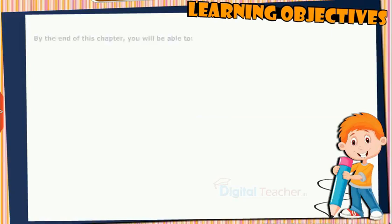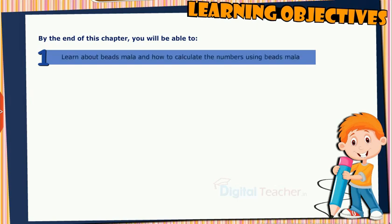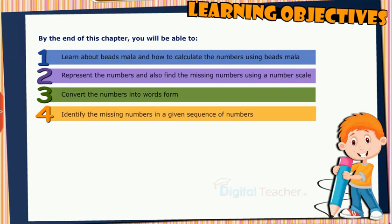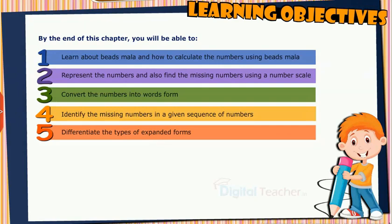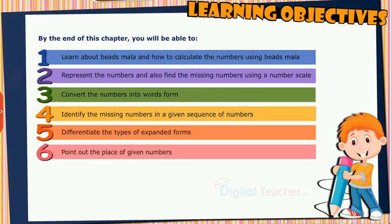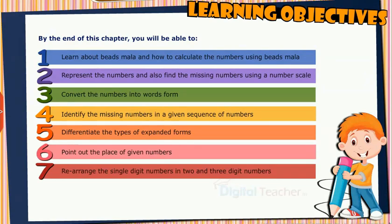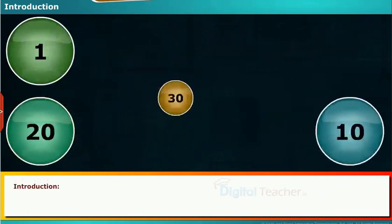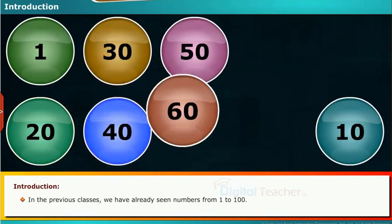Learning objectives: By the end of this chapter you will be able to learn about beads mala and how to calculate numbers using beads mala, represent numbers and find missing numbers using a number scale, convert numbers into word form, identify missing numbers in a given sequence, differentiate the types of expanded forms, and point out the place of given numbers.